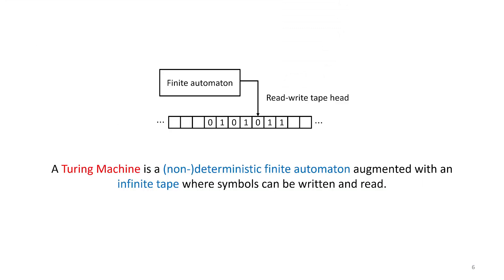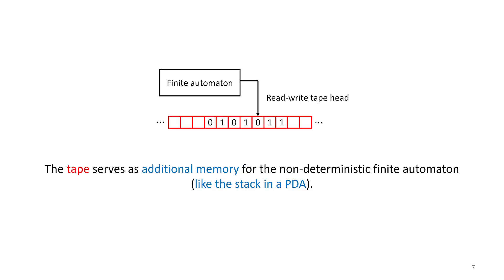Formally, we can define a Turing machine as a non-deterministic finite automata, something that we're already familiar with, but it's been augmented. Just like in the case of a PDA, a pushdown automata, we're going to use an infinite tape where symbols can be written and read from. This tape is intended to be the additional memory beyond the states of the finite automata.